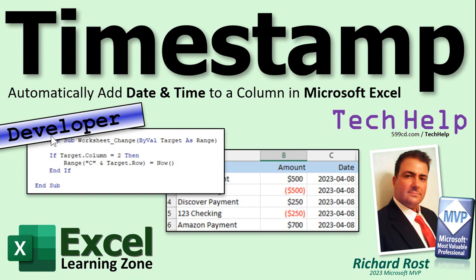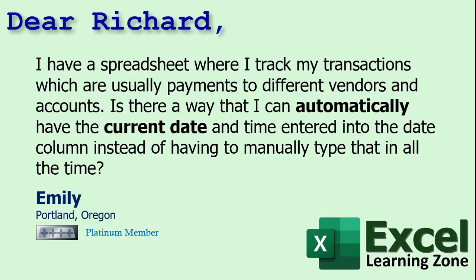This is a developer level video so it's going to involve a little bit of VBA — you can see some of it right there, it's not that hard. Emily from Portland, Oregon, one of my platinum members, says: I have a spreadsheet where I track my transactions, which are usually payments to different vendors and accounts. Is there a way that I can automatically have the current date and time entered into the date column instead of having to manually type that in all the time?